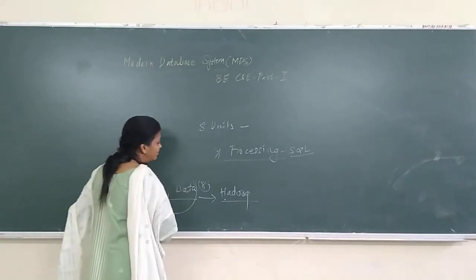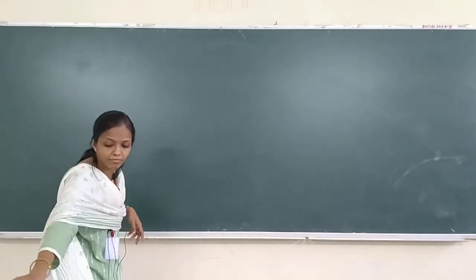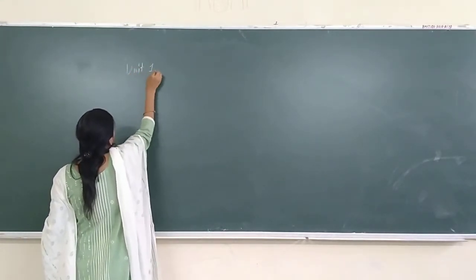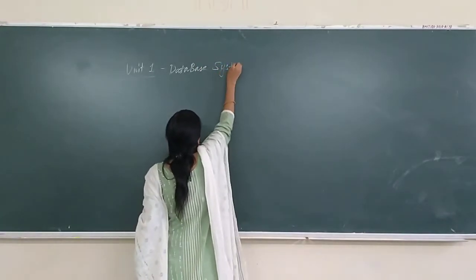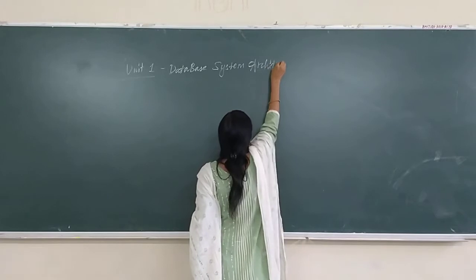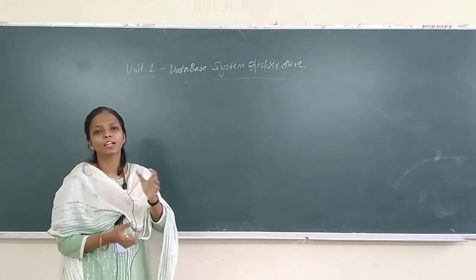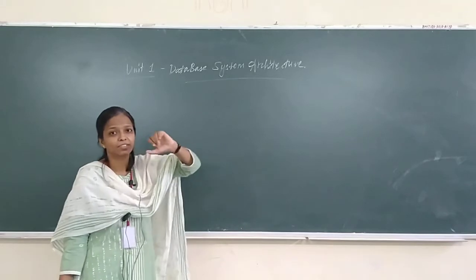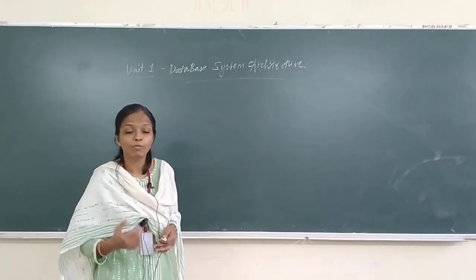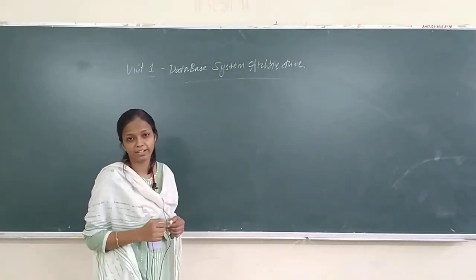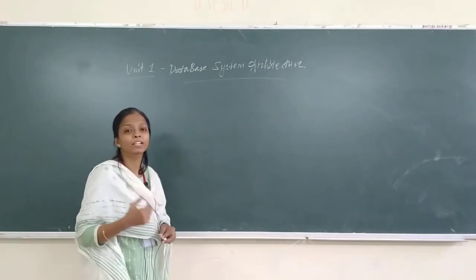Now we are going to actually start the first chapter. Unit 1 is Database System Architecture. Architecture is nothing but the schema, or the design, or the overall structure of any system. We are talking about database architecture — that is, how the database is maintained inside the system.